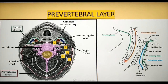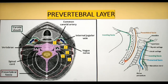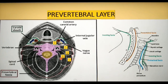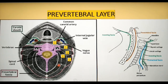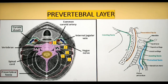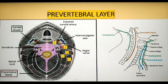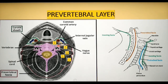Moving on to the prevertebral layer. As the name suggests, it lies in front of the prevertebral muscles and forms the floor of the posterior triangle of the neck. The prevertebral muscles lie between the fascia and the vertebra. There are three sets of muscles associated with this fascia: the first group is located anterior to the vertebrae and includes the longus capitis and longus colli muscles.